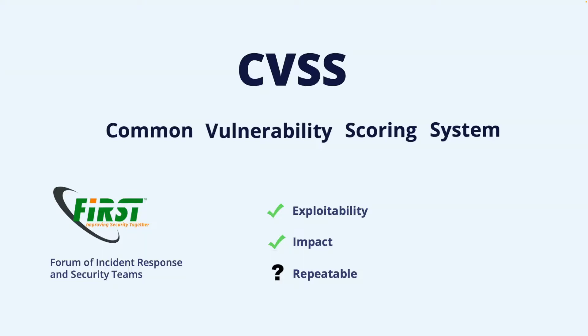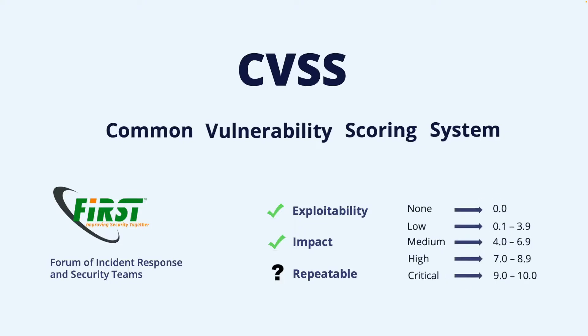Repeatability is more of a goal than a fact, since the complex nature of vulnerabilities always leaves some room for interpretation. This will often result in somewhat different severity scores when we look at different sources. The score is a number between 0 and 10 with one decimal, and is sometimes translated into a more qualitative measurement: none, low, medium, high, or critical severity.